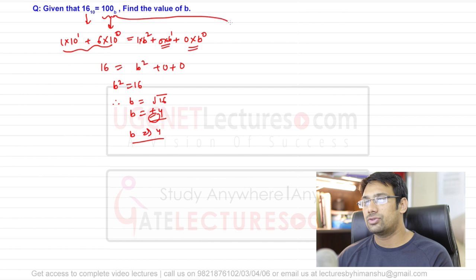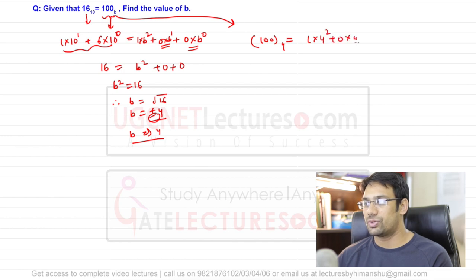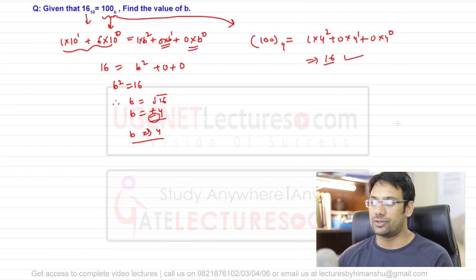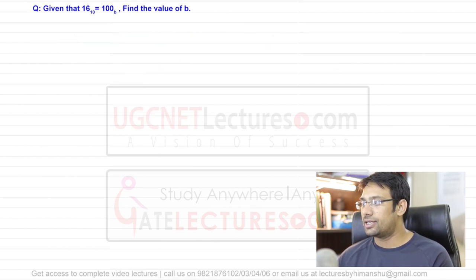We can verify: 100 in base 4 = 1×4² + 0×4¹ + 0×4⁰ = 16. That's correct. Now let's move to the next question.